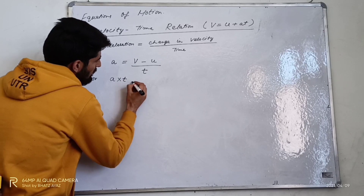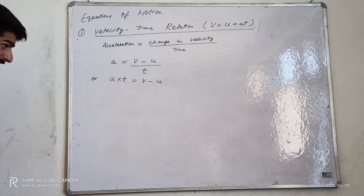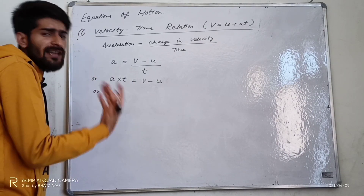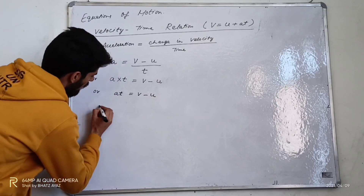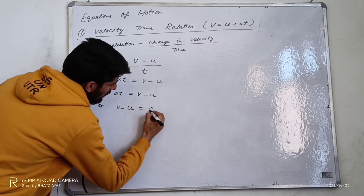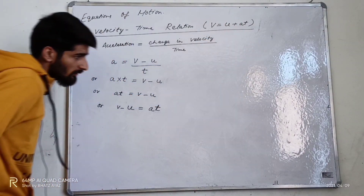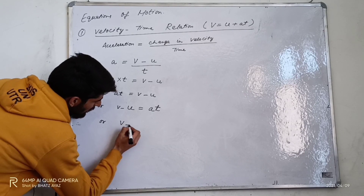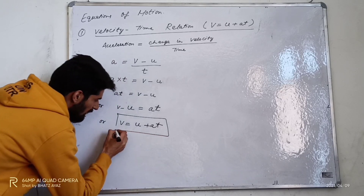I can write here: a multiplied by t is equal to v minus u. So at is equal to v minus u, or v minus u is equal to at. Since I have to derive v is equal to u plus at, I can write: v is equal to u plus at. This is the first equation of motion.